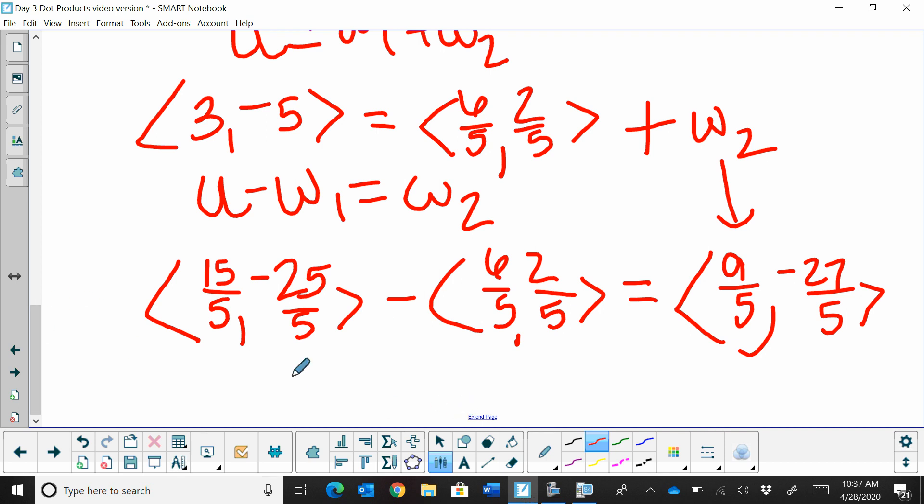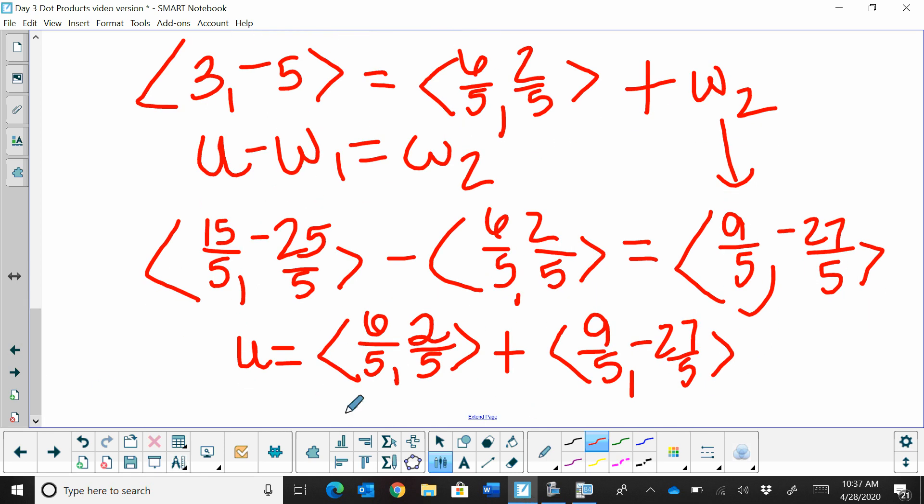So how do we write our answer? Well, we write our answer as u is equal to the sum of two vectors. So w sub 1, which is (6/5, 2/5), plus the second vector, which is (9/5, -27/5). And we've just taken u and we've decomposed it into two separate parts. And that's our answer.